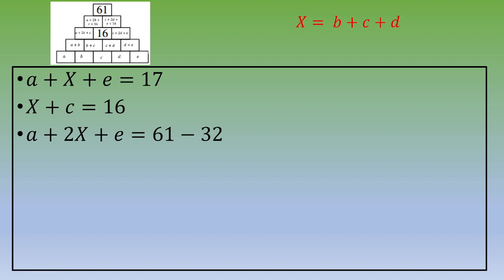Now, we can notice that in equation number one and equation number three, we've got also the same quantity, a plus e. So, we can set y equals a plus e. If we plug y now in equation number one and number three, we obtain x plus y equals 17, 2x plus y equals 29.